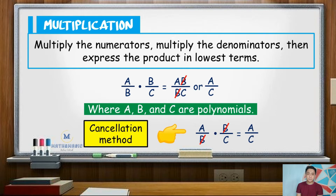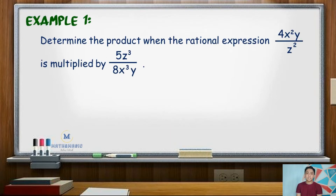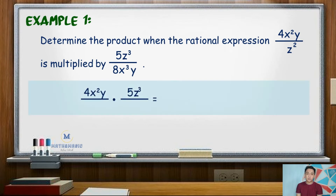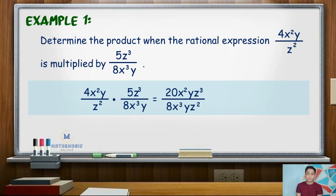For our first example, determine the product when the rational expression 4x squared y over z squared is multiplied by 5z cubed over 8x cubed y. We need to multiply numerators: 4x squared y times 5z cubed is 20x squared yz cubed. For the denominator, z squared times 8x cubed y is 8x cubed yz squared. Thus, the initial product is 20x squared yz cubed over 8x cubed yz squared.